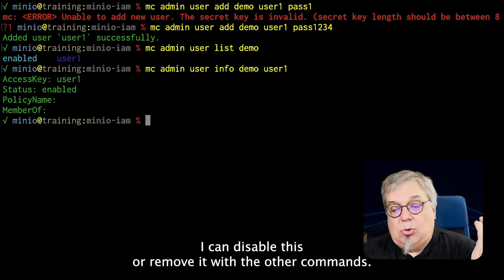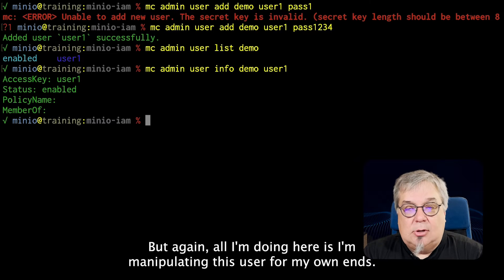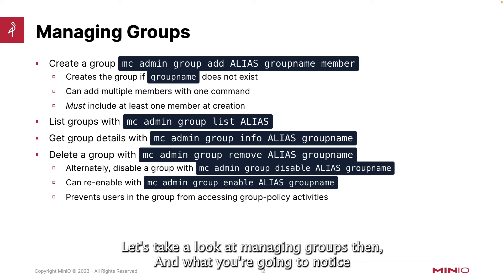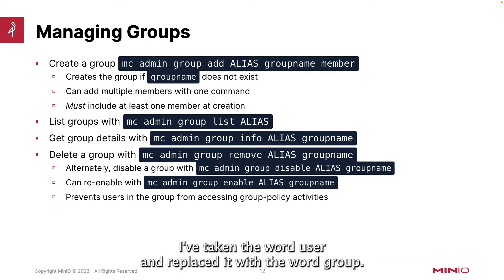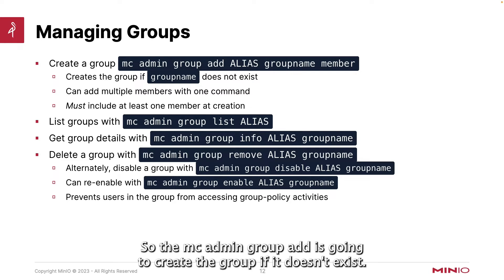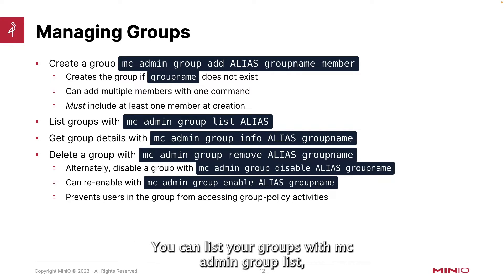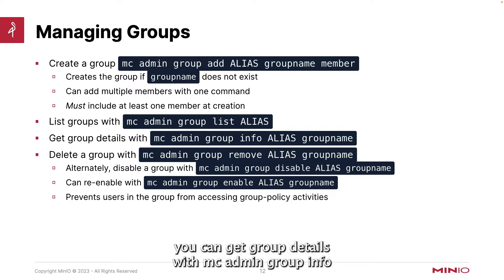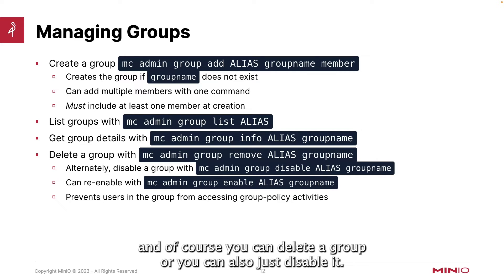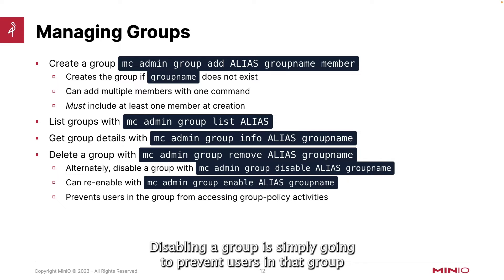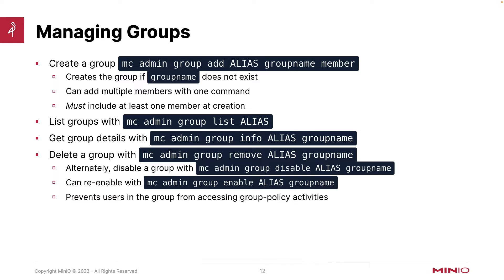I can disable this or remove it with the other commands. Let's see what we can do about putting this user in a group. With managing groups, what you're going to notice is that for the most part I've taken the word user and replaced it with the word group, though some commands have minor changes. The mc admin group add command will create the group if it doesn't exist. I can also add multiple members to that group with one command, but the first time I create the group it has to have at least one member — you cannot create a group with no members. You can list your groups with mc admin group list, get group details with mc admin group info, and of course you can delete a group or just disable it.